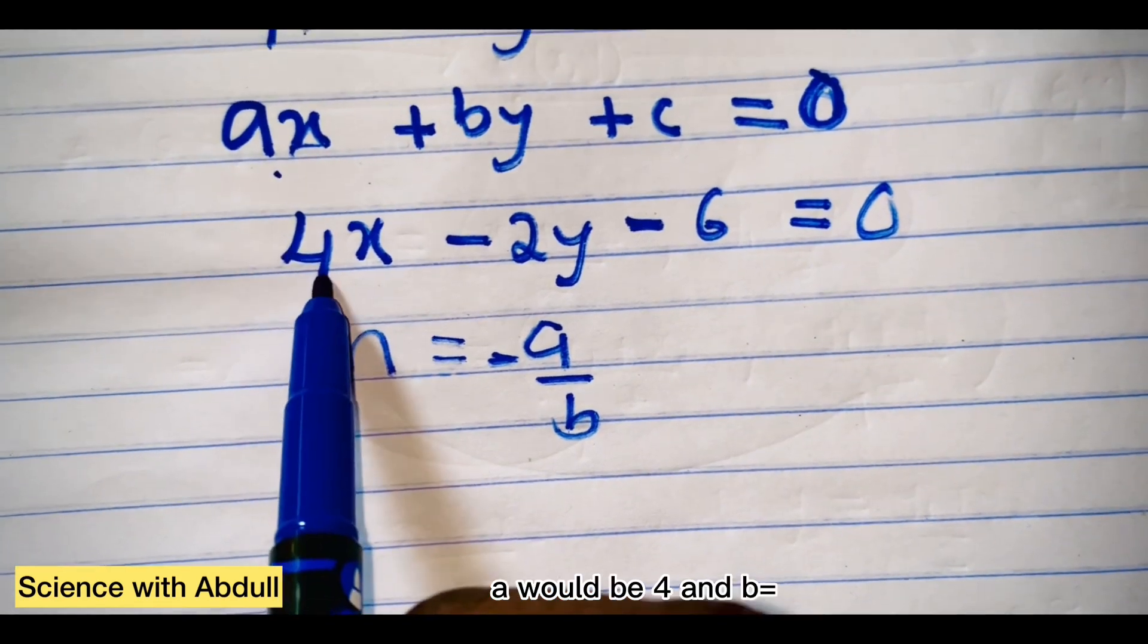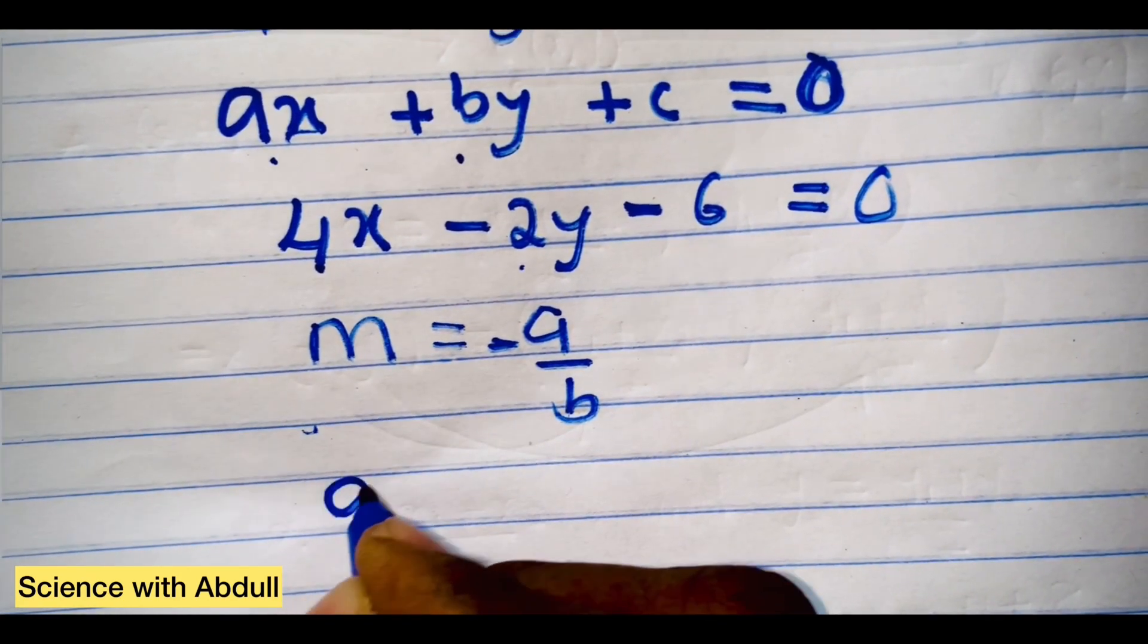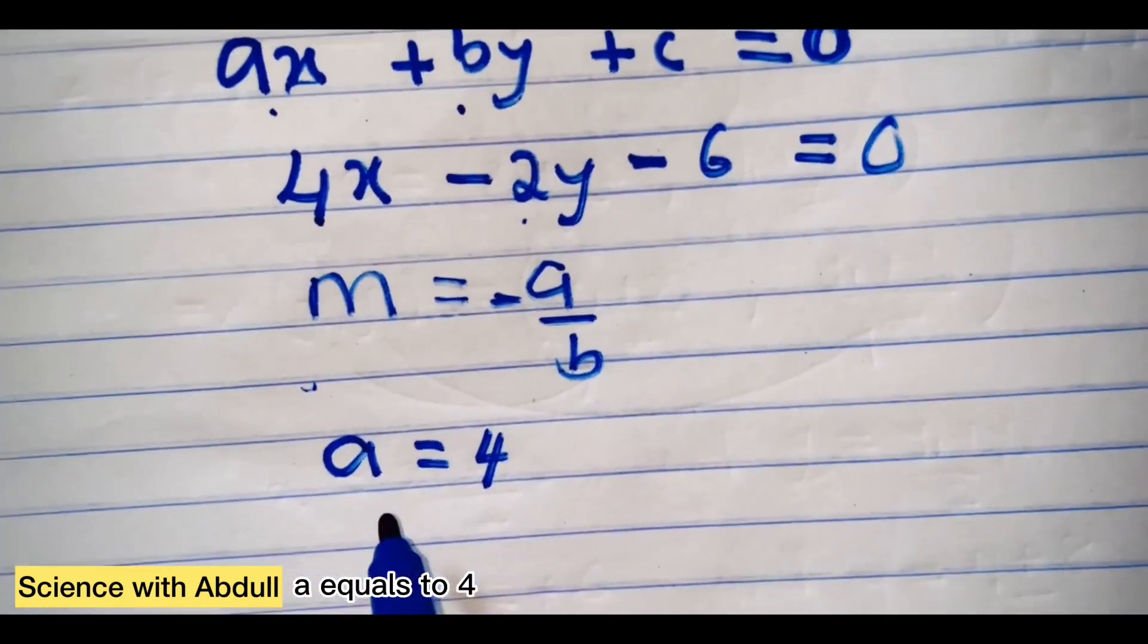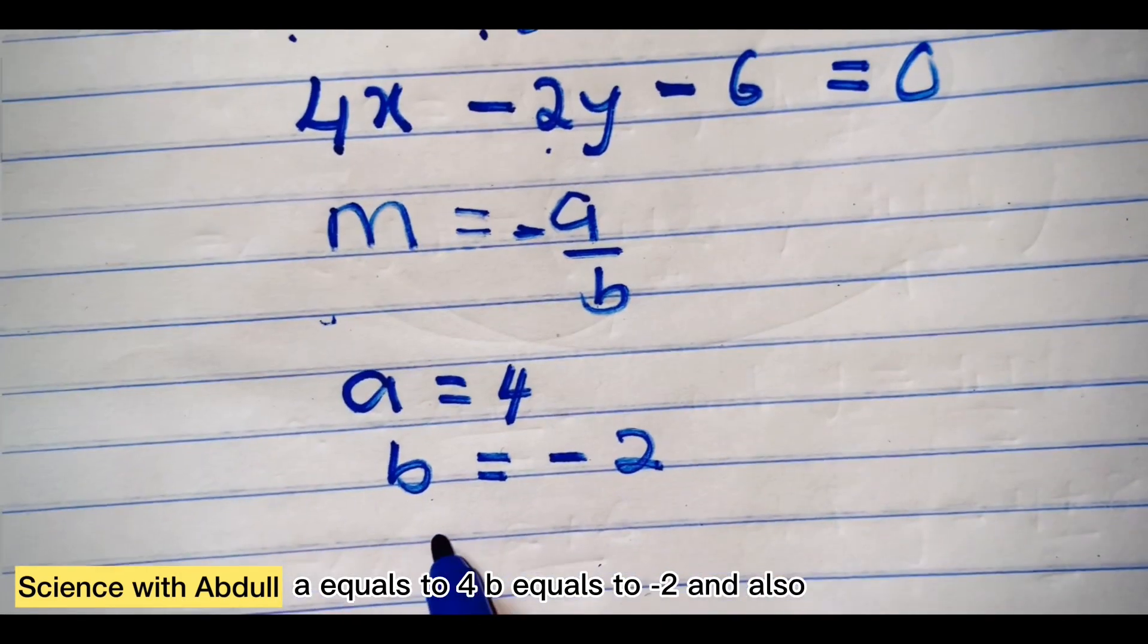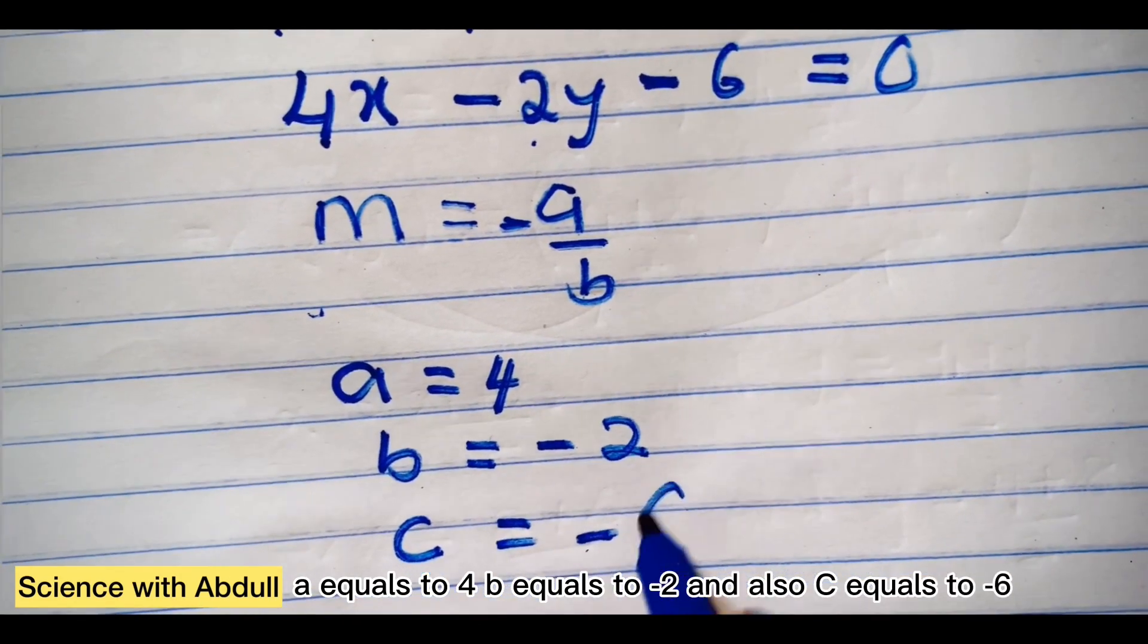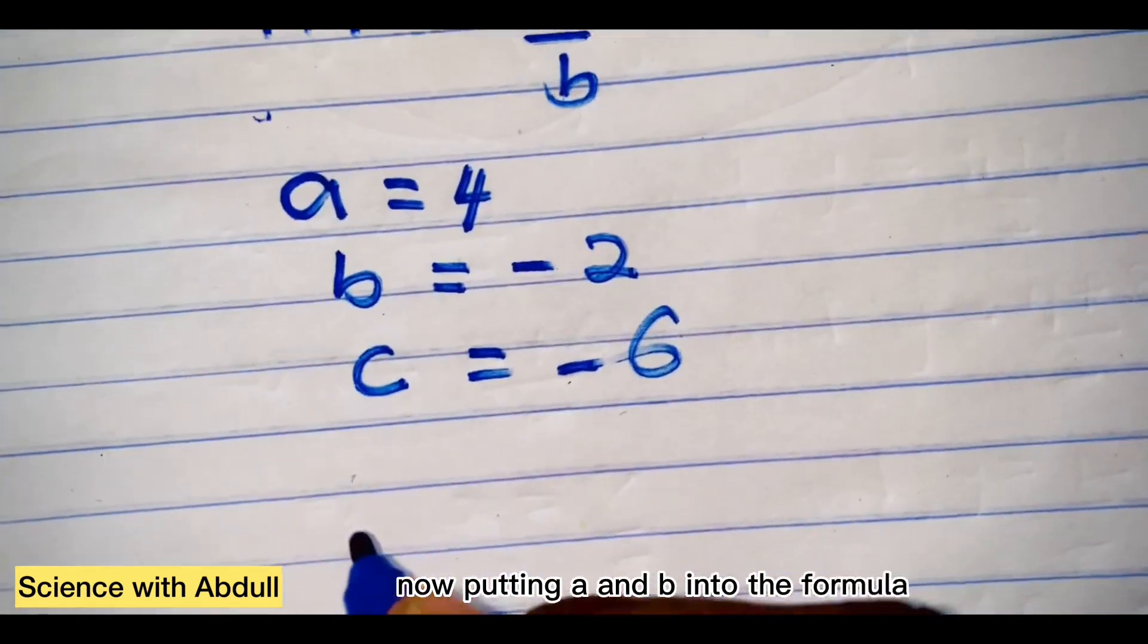a would be 4, b negative 2, a equals to 4, b equals to negative 2, and also c equals to negative 6. So now putting a and b into the formula.